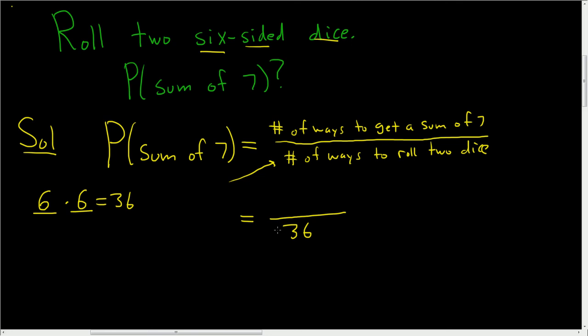Now we want to figure out how many ways to get a sum of 7. Well, we can get 1 on the first die and 6 on the second die, or we can also get 6 on the first and 1 on the second. We can also do 3 and 4. Likewise, we can get 4 and 3. What else? Oh, 2 and 5, and 5 and 2. And I believe that's it.